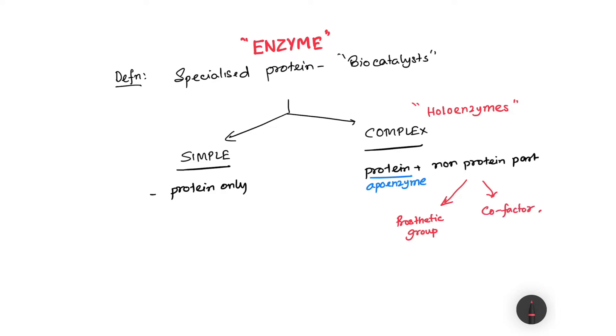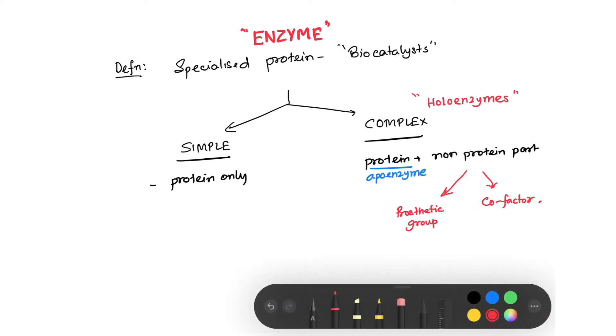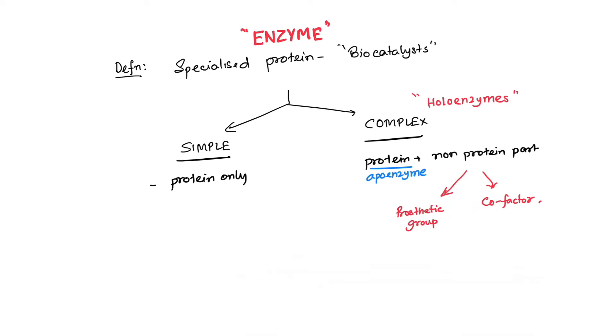So basically, if we try to express our understanding in a mathematical formula, that will be simply: holoenzyme equals apoenzyme plus prosthetic group or cofactor.